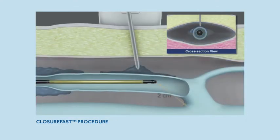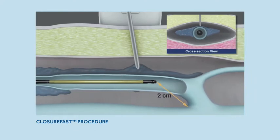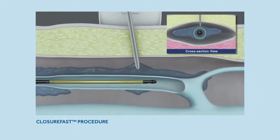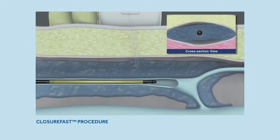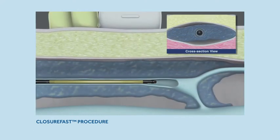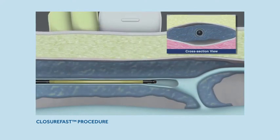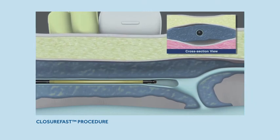The catheter tip position is confirmed and adjusted as needed to ensure the tip is two centimeters from the SFJ. Once in place, infiltration of the junction can proceed. External compression is applied to ensure good contact between the catheter and the vein wall.